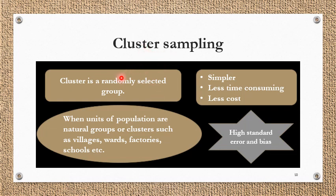Next is cluster sampling. A cluster is a randomly selected group. When units of the population are natural groups or clusters — such as villages, wards, factories, schools — these clusters naturally exist. For example, if I want to study factory workers, I take different factories as they already exist, and can study chemical factory workers versus mechanical ones to examine occupational hazards. It is simple, less time-consuming, and less costly because we don't have to create the clusters. Though samples are randomly chosen, there can be a higher standard error or bias because we are using naturally occurring clusters.